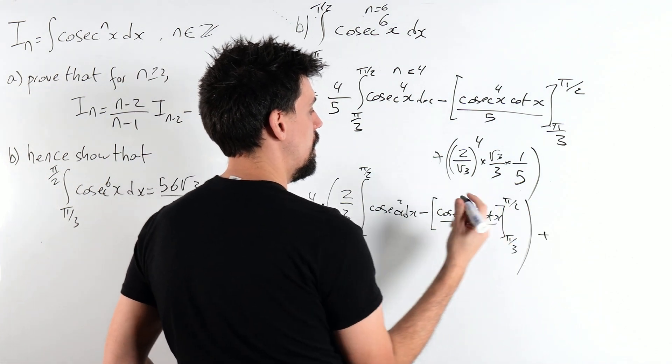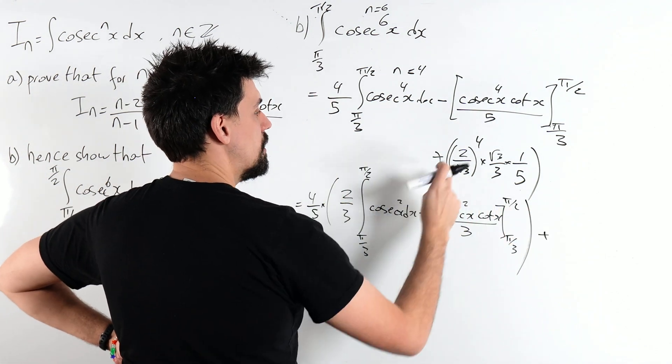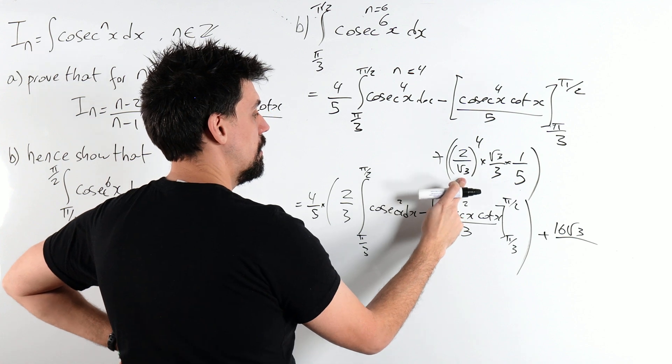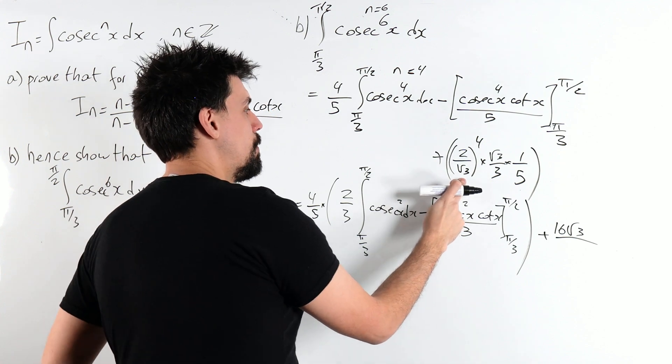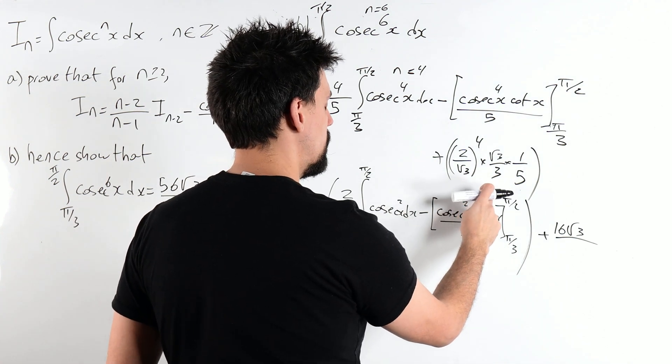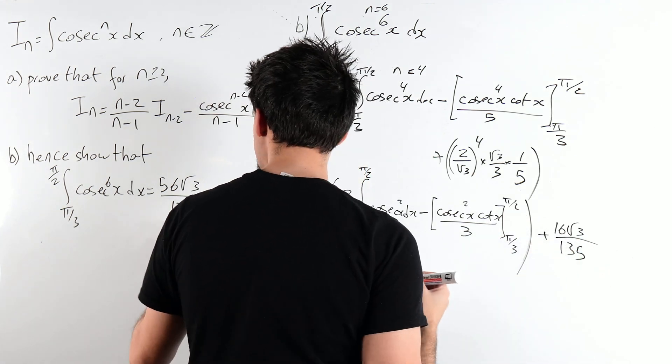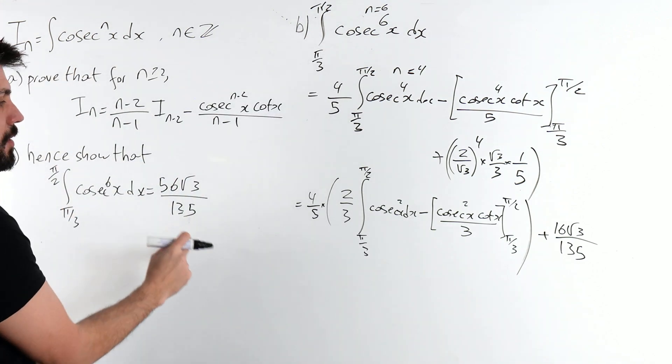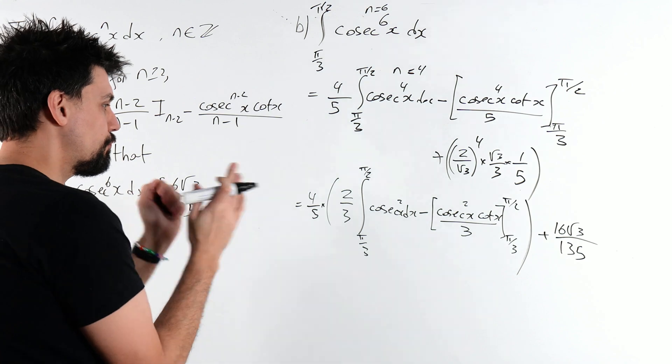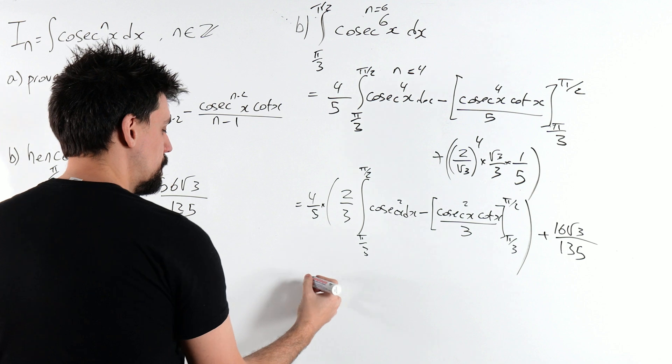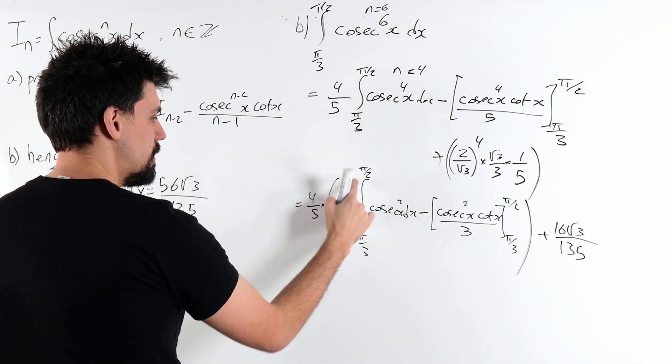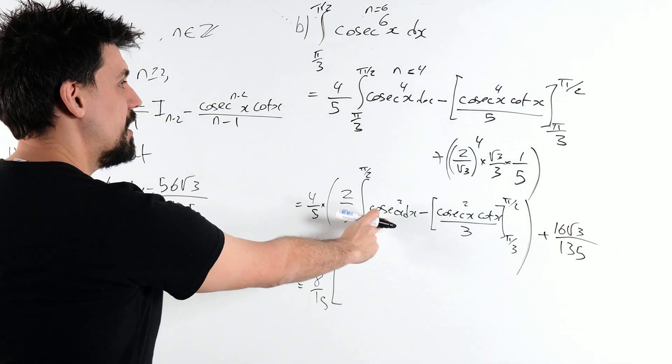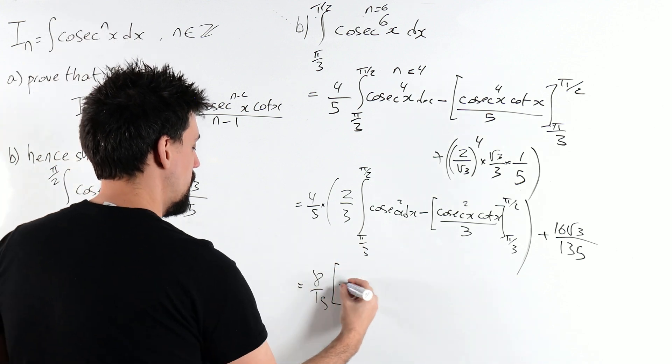What have I got? That's a 16 root 3 over, root 3 to the power of 4 is 9, 27 times 5 is 135. Oh, that's good. Oh, that's interesting. So that's looking quite nice. That's looking quite tasty. Okay. So 4 fifths times 2 thirds is 8 fifteenths. And cosec squared we can integrate. Cosec squared becomes minus cot.